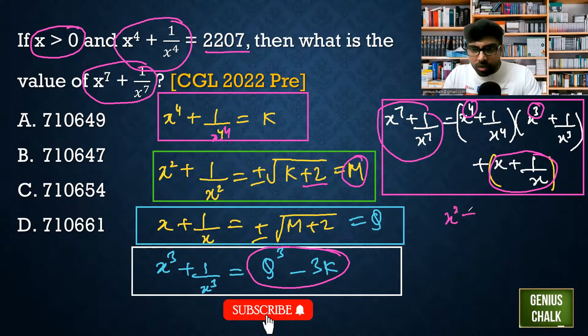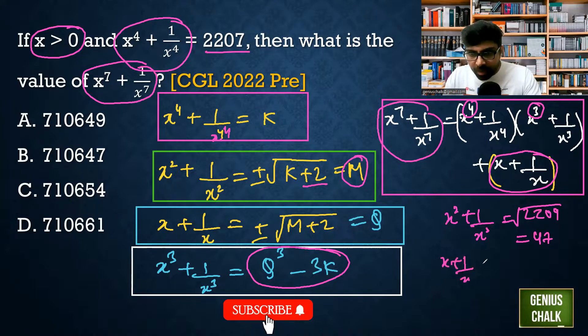If x^4 plus 1 by x^4 is this, so what is x square plus 1 by x square? It has to be root of 2209, and that is 47. Next, what is x plus 1 by x? That is root of 47 plus 2, which is root of 49, that is 7.